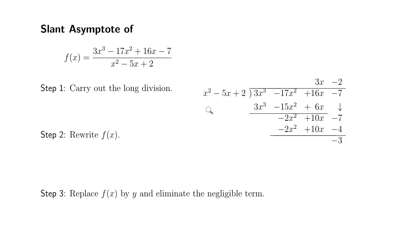We have to ask ourselves, how many x squares can we squeeze into 3x cubed? That'll be 3x. So 3x times x squared gives you 3x cubed, and then 3x times negative 5x gives you negative 15x squared. 3x times 2 gives you 6x.